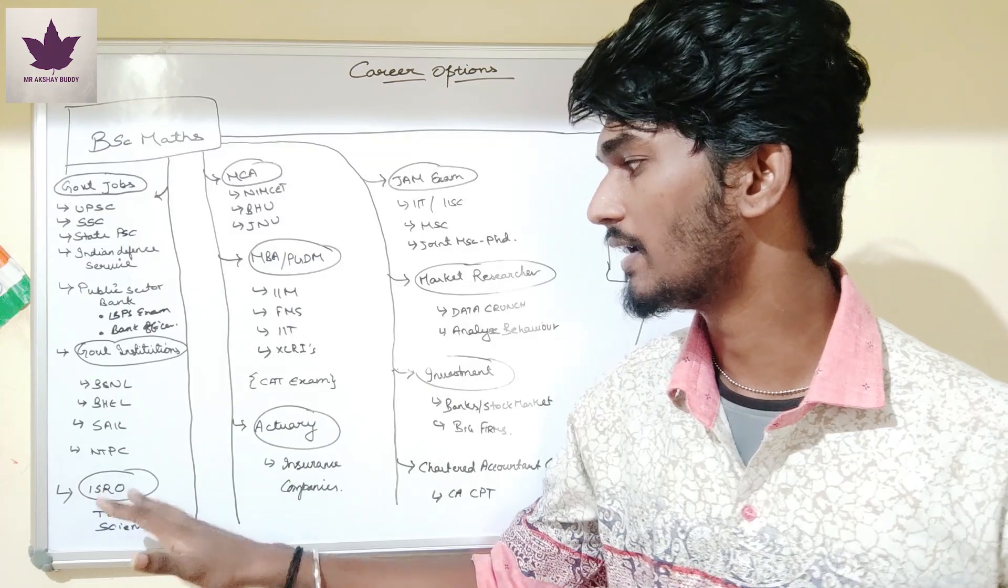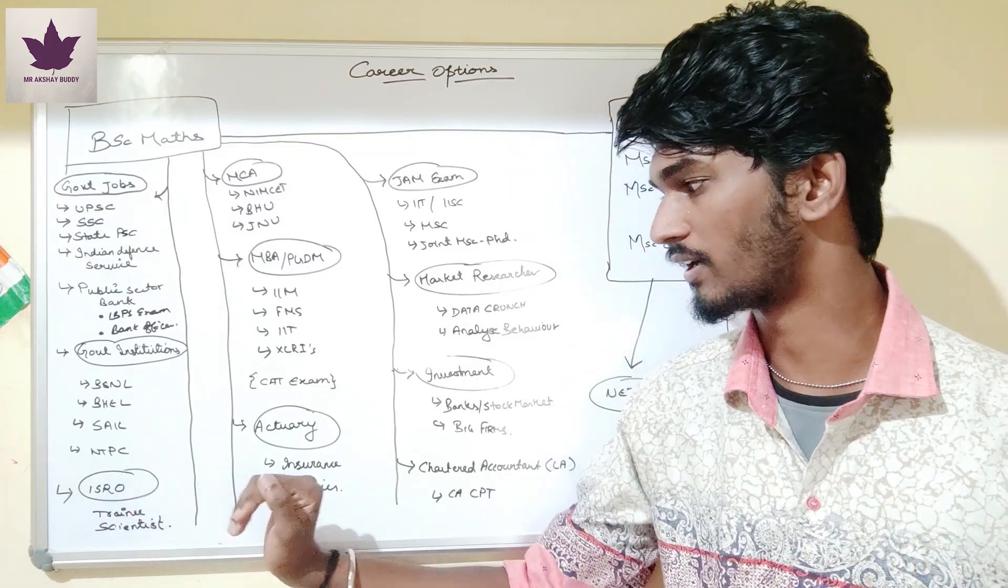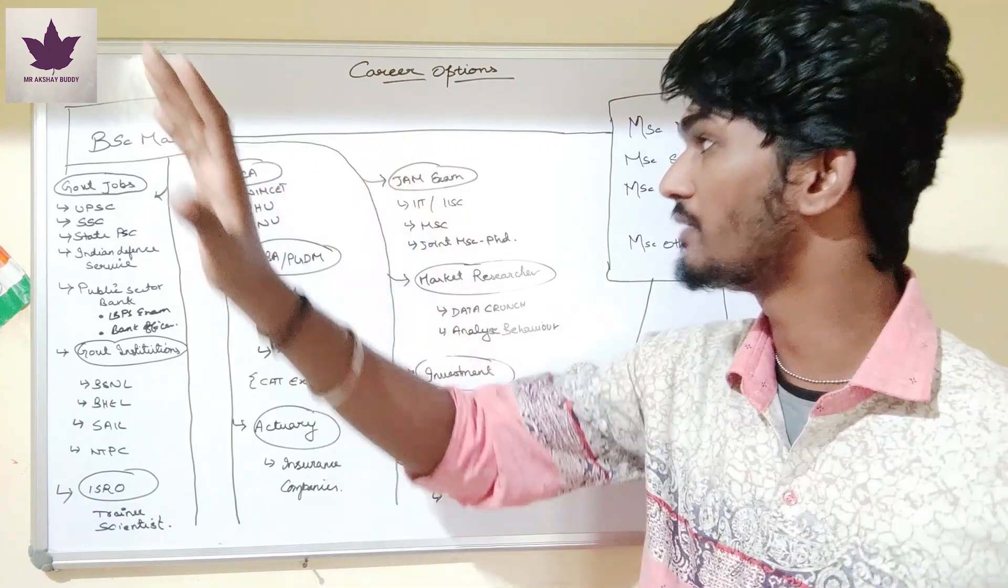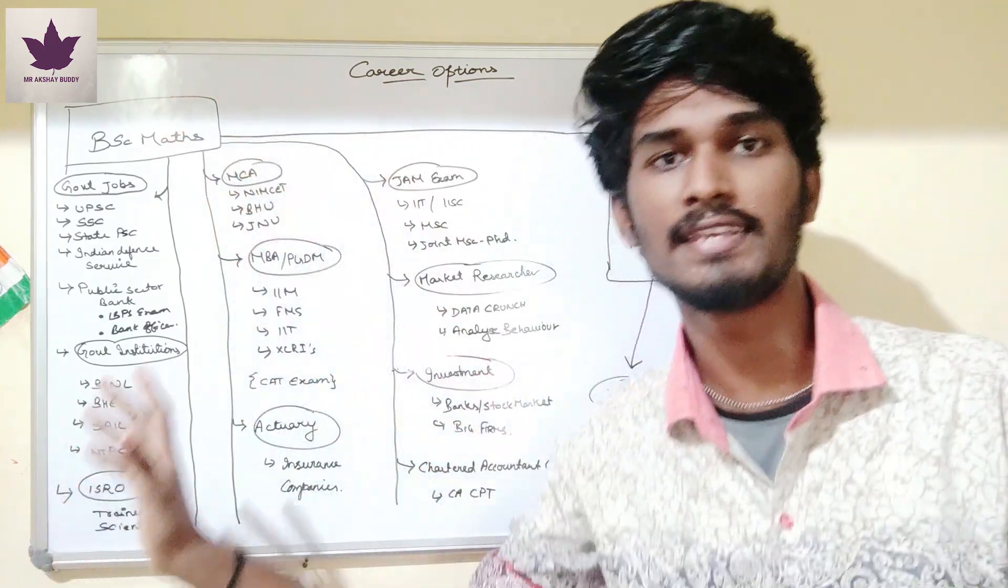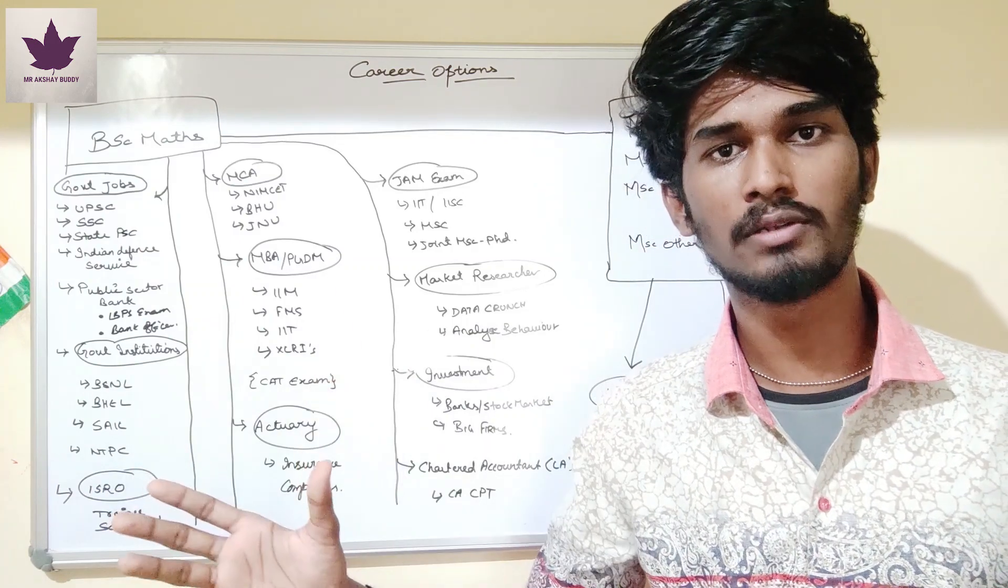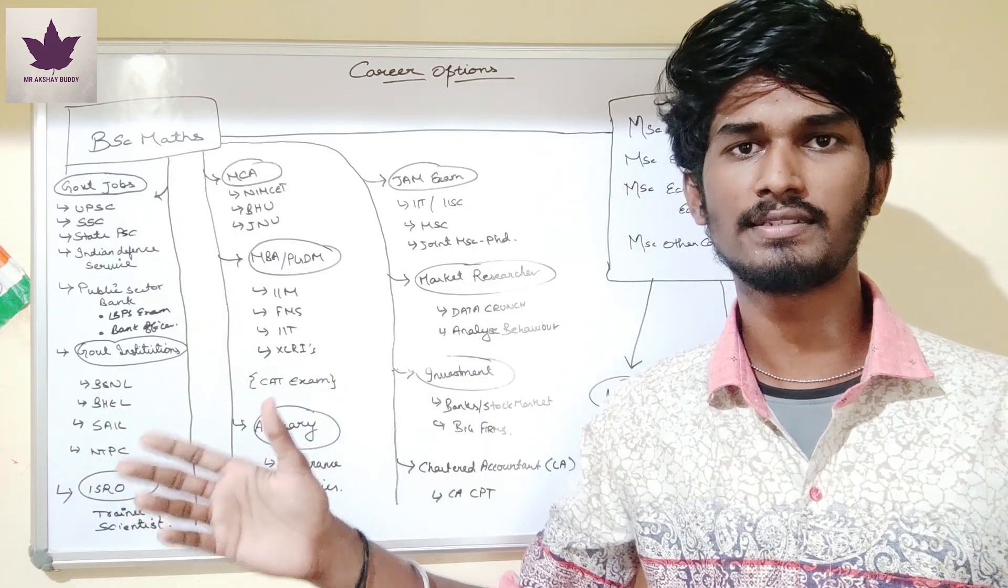Now, ISRO - Indian Space Research Organization. You can go as a trainee scientist. Just think, with B.Sc. Mathematics you can directly join ISRO as a trainee scientist. And for ISRO, there is DRDO - Defense Research Development Organization.